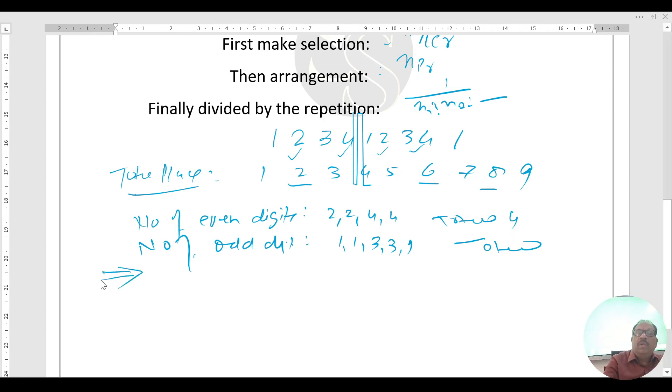To complete this 9 digit number, there are 2 sub-events. Sub-event 1: to fill up even digits. Sub-event 2: to fill up odd digits. To get complete event, number of sub-events are to be multiplied.